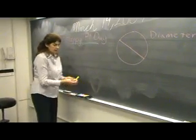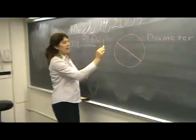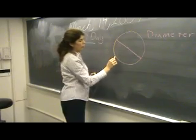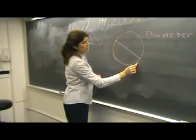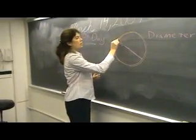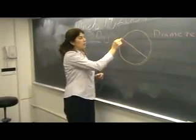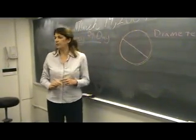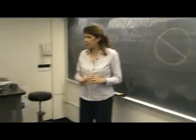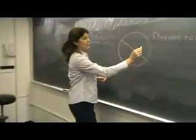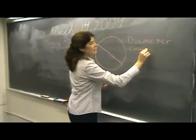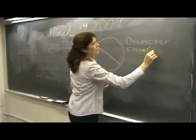There's another word we learned yesterday. If we take a line and start anywhere on the circle and go all the way around the circle and back to where we started, does anyone remember the term for measuring all the way around a circle? CJ? Circumference. Very good. So that's the circumference of the circle.